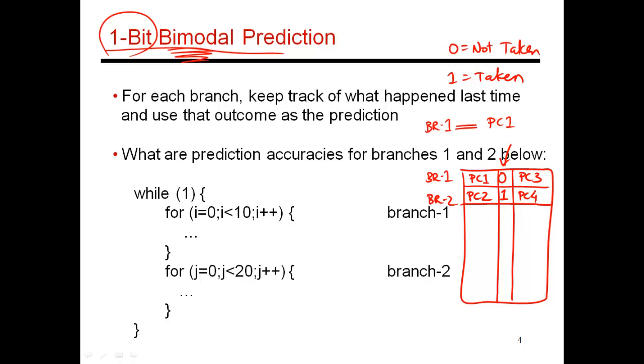Now let's take this example code here. This is a while loop that runs for a really long time, and then finally it exits the while loop when some condition is met. And inside this while loop, there are two for loops, one that runs 10 times and one that runs 20 times. So at the end of the for loop, there is branch 1,